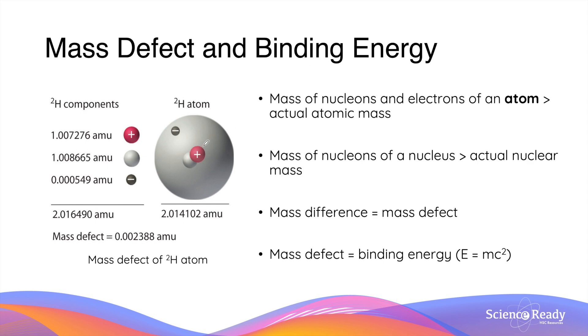In other words, the combined mass of protons, neutrons and electrons were found to be heavier than the actual mass of the atom. Here's an example: the combined mass of particles in a hydrogen-2 atom is 2.16490 atomic mass units (AMU), while its actual mass is slightly smaller, 2.014102 AMU.